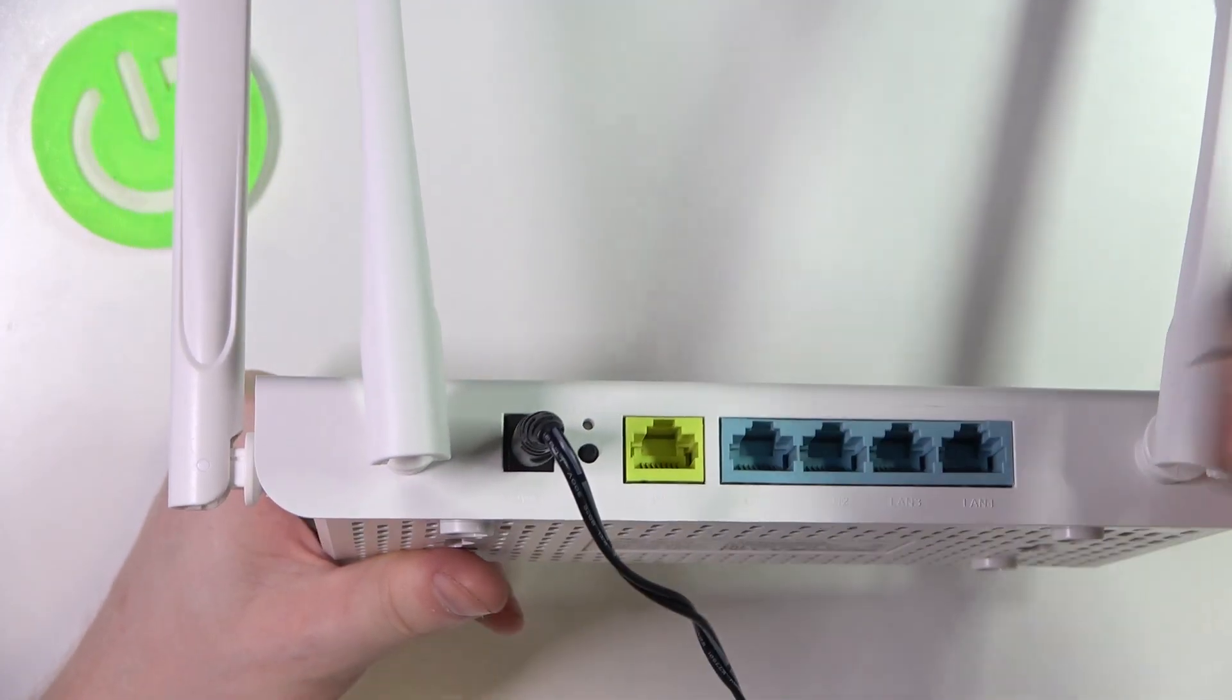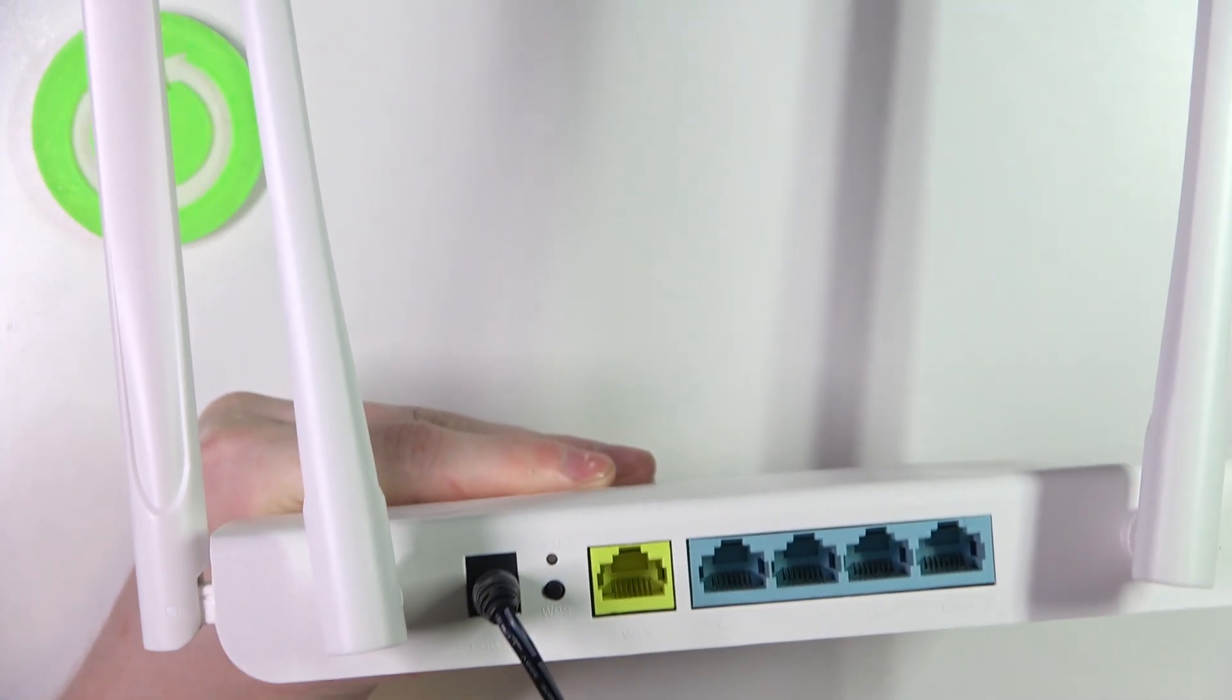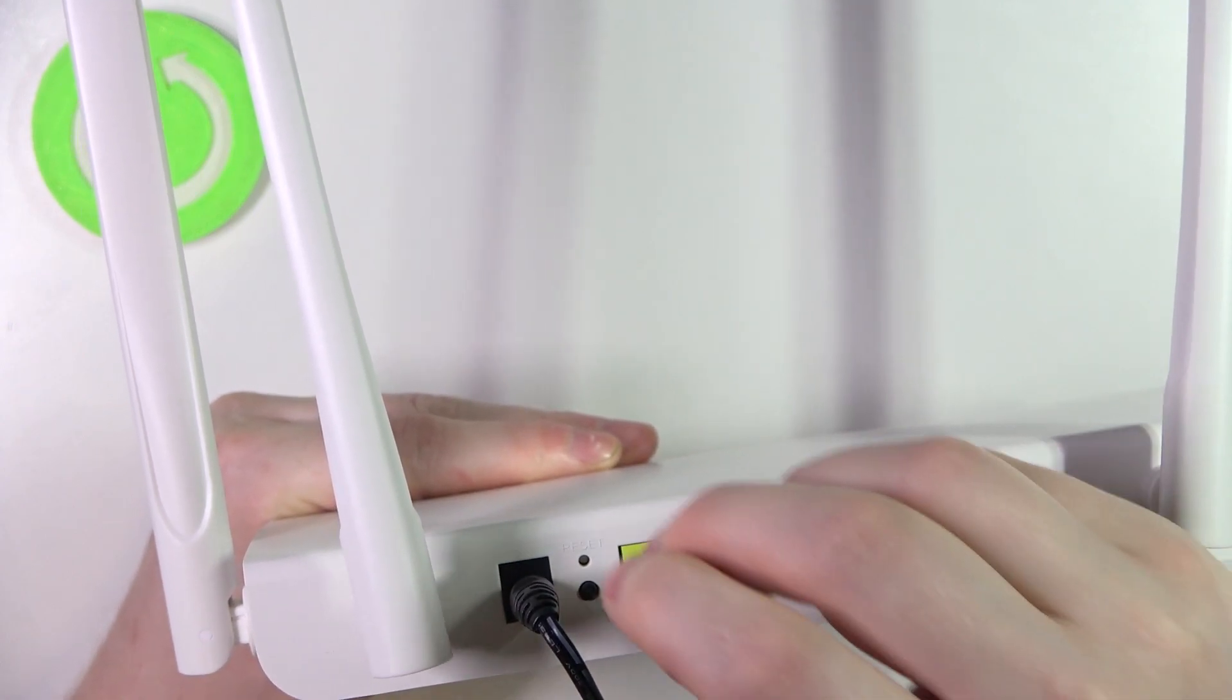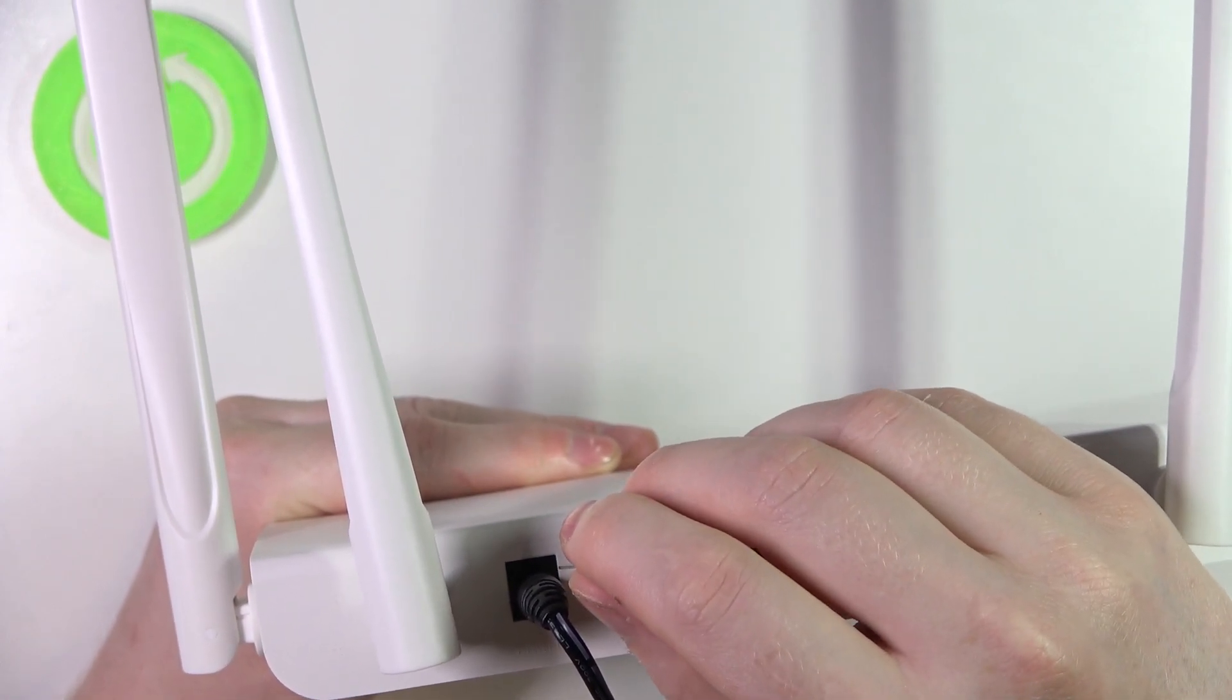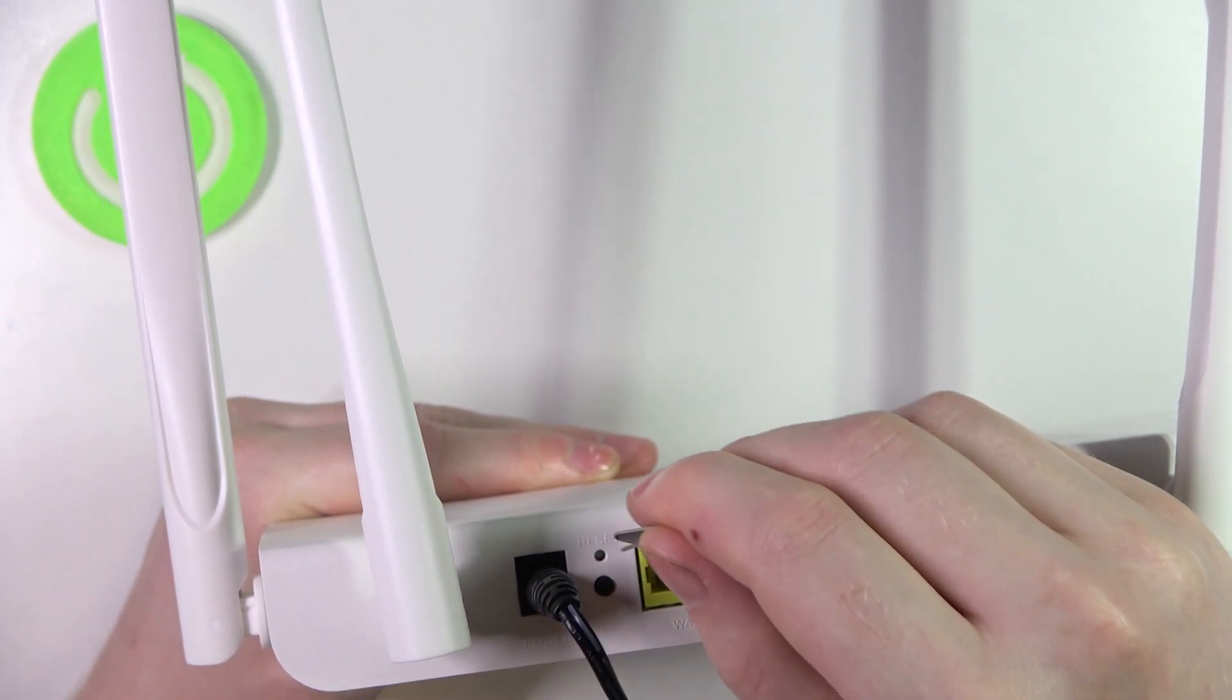So take something thin like a SIM ejection tool I have right here and right next to the power source we have the reset. So click and hold it for six seconds. You can do it for seven seconds just to make sure.